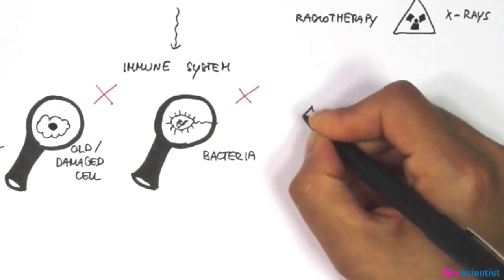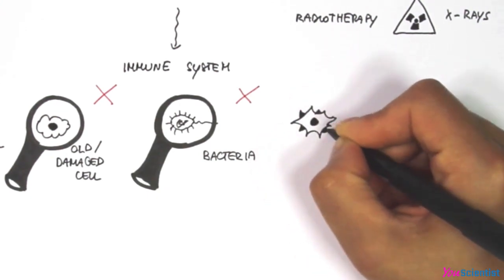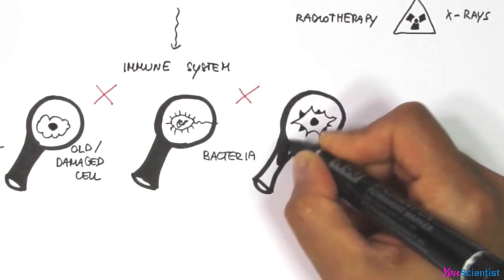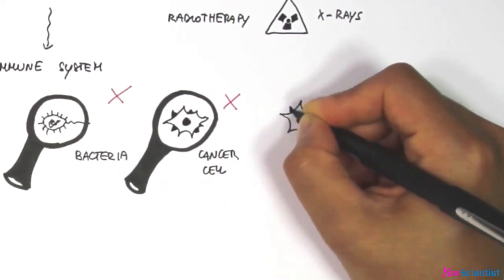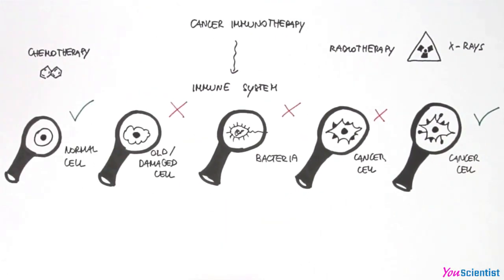Cancer cells accumulate many mutations in their genome and expose different proteins on their plasma membrane that can be recognized by the immune system. But cancer cells at a certain point are able to escape immune system response.